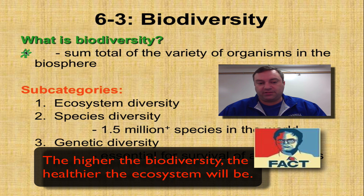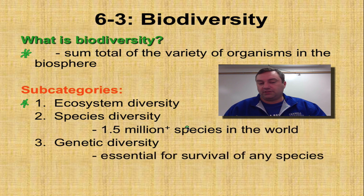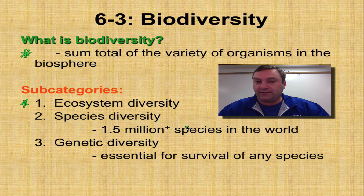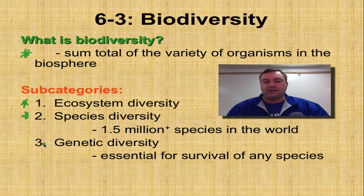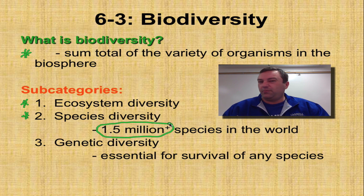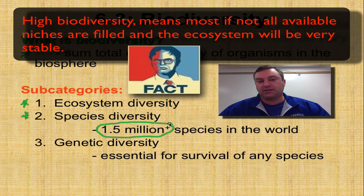Biodiversity comes in three different subcategories. You have ecosystem diversity, which means the more and greater variety of ecosystems that you have in an individual biome, the better. We have species diversity, and this is really what we're talking about in biodiversity — how many different species are there in a given area? Within our biosphere, as far as we can tell, there are a little bit more than 1.5 million different species in the world. The greater the number of species, the more stable any environment is going to be.